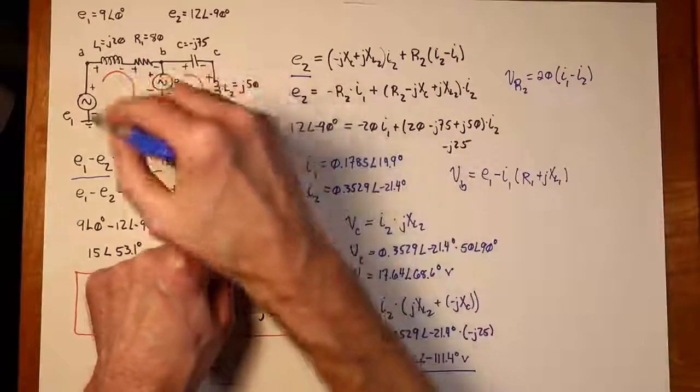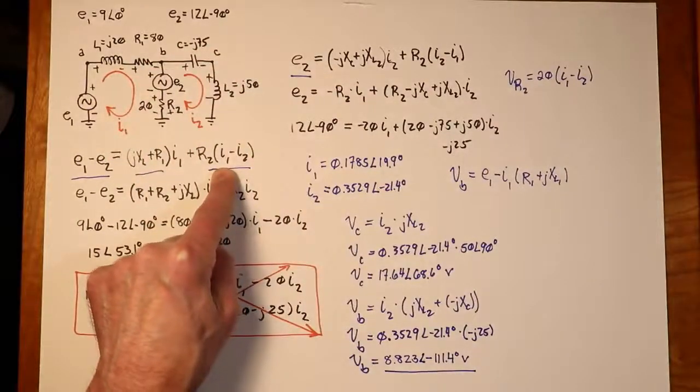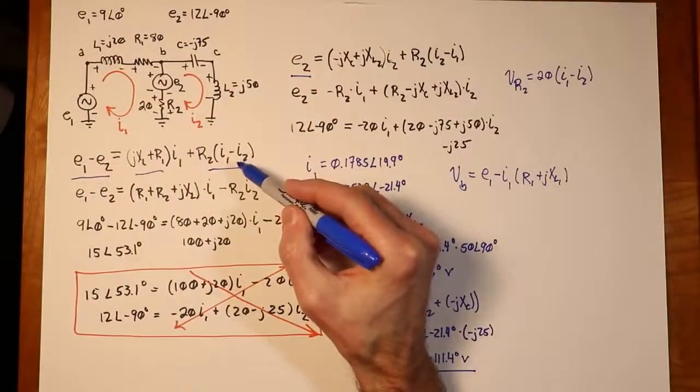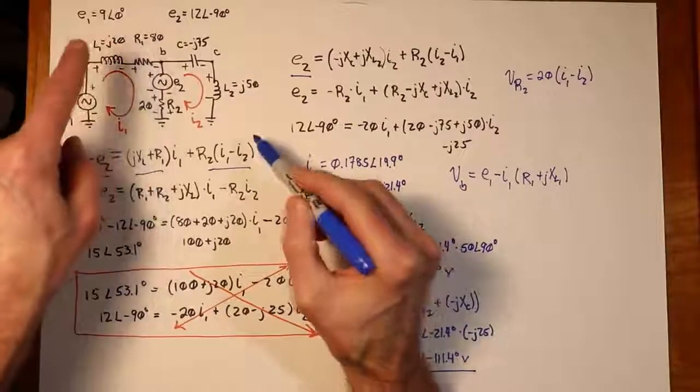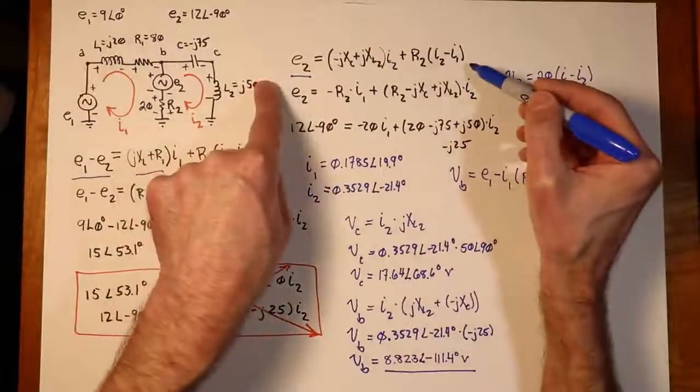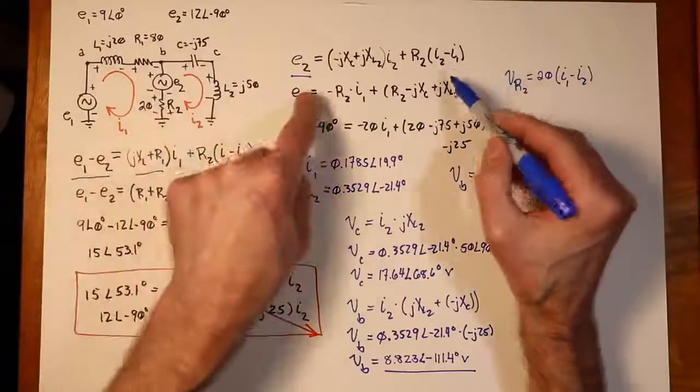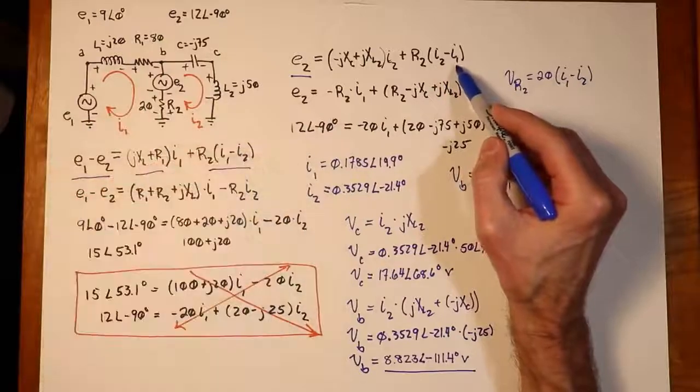And when we have a component that has meshing currents, the current we're currently looking at, in other words, the current loop current, that we take is positive, and the meshing one we take is negative. So, here we are in loop one. I1 is positive, I2 is negative. Over here, in the second equation for the second loop, we had the same issue with R2, and we see I2 is taken as the positive, and I1 is taken as the negative.